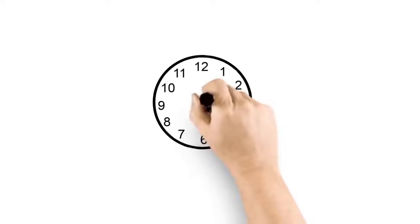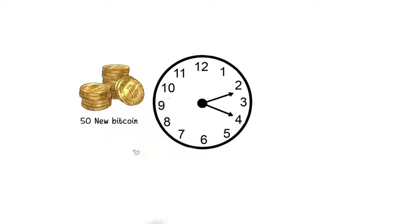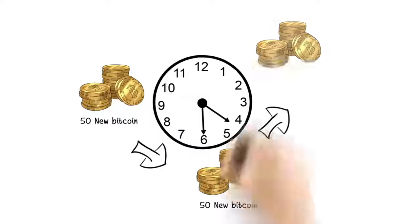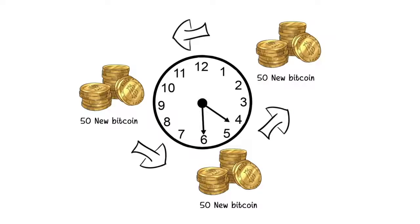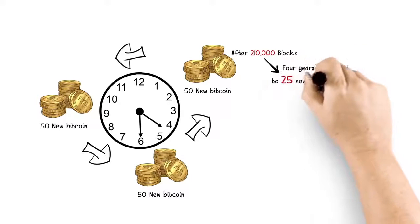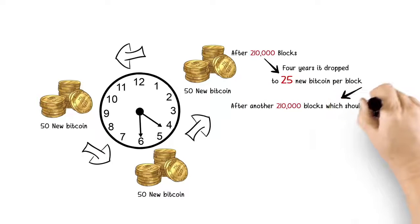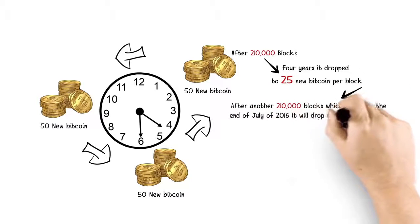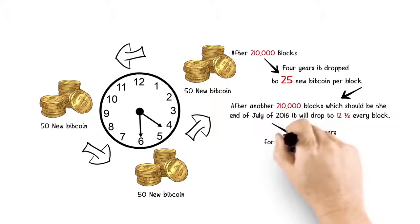On average, every 10 minutes, a new block of Bitcoin is created and given to someone that is mining. In the beginning, it was 50 new Bitcoin being created every 10 minutes. After 210,000 blocks, which took about 4 years, it dropped to 25 new Bitcoin per block. After another 210,000 blocks, which should be the end of July 2016, it will drop to 12 and a half every block. And it will continue to halve about every 4 years for the next 125 years until 2140.